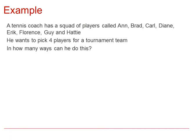If a tennis coach has a squad of players called Anne, Brad, Carl, Diane, Eric, Florence, Guy and Hattie — or A through H — that's eight players, of which he wants to pick four of them for a tournament team. In how many ways could he do this? Since order does not matter here, it's a combinations problem rather than a permutations problem.